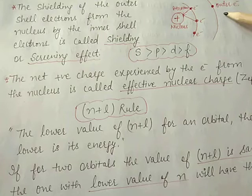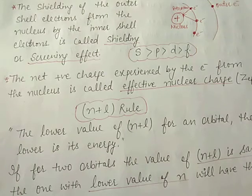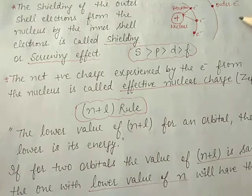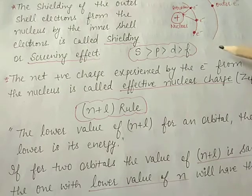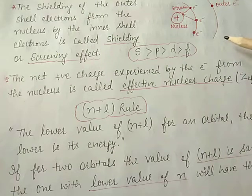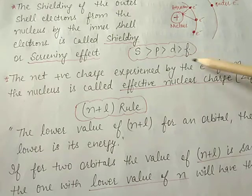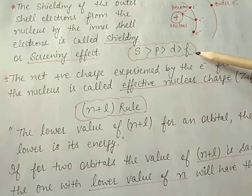In case of f orbitals, the attraction is less, so less energy is required to remove the electrons. The shielding effect depends on ionization energy, so f orbital electrons are easily removed from the shell, meaning they have low ionization energy.